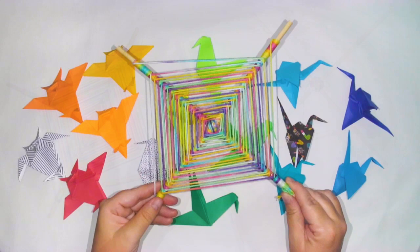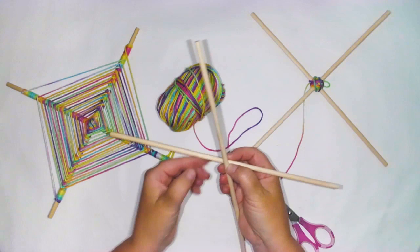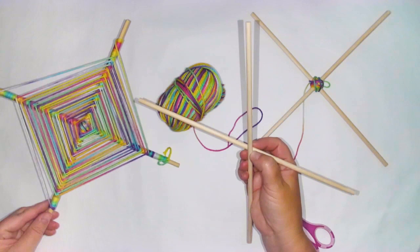Let's grab our supplies. You'll need to get your two wooden dowels, a pair of scissors, and your yarn. The first thing that we need to do is actually take the two wooden dowels and secure them so that they don't move while we're doing the weaving part.